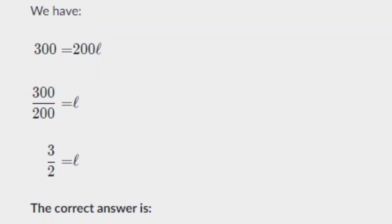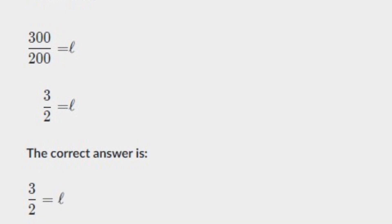Therefore 300 equals 200L. The 200 from the right hand side will come to the left hand side to be divided from 300. So we can write 300 divided by 200 equals L. We can cancel the zeros, so 3/2 equals L. Therefore the value of L is 3/2, or you can simply write it as 1.5.